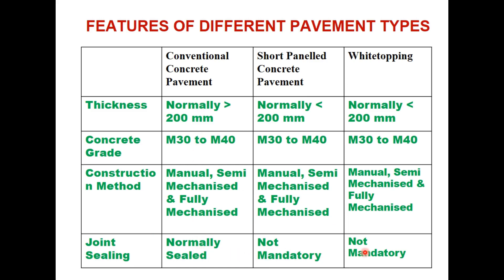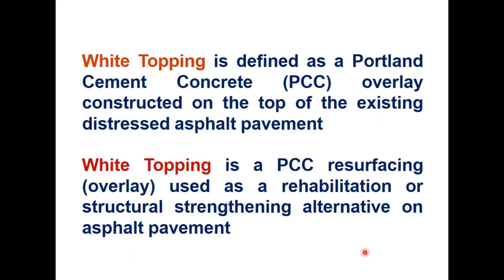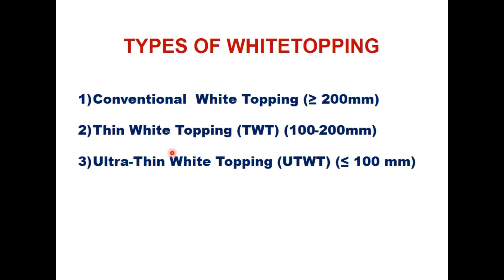White topping is a Portland cement concrete overlay constructed on top of an existing distressed asphalt pavement. It is a PCC resurfacing used as a rehabilitation or structural strengthening alternative on asphalt pavement. There are three types: conventional white topping with slab thickness more than 200 millimeter, thin white topping with thickness 100 to 200 millimeter, and ultra-thin white topping with thickness less than 100 millimeter.